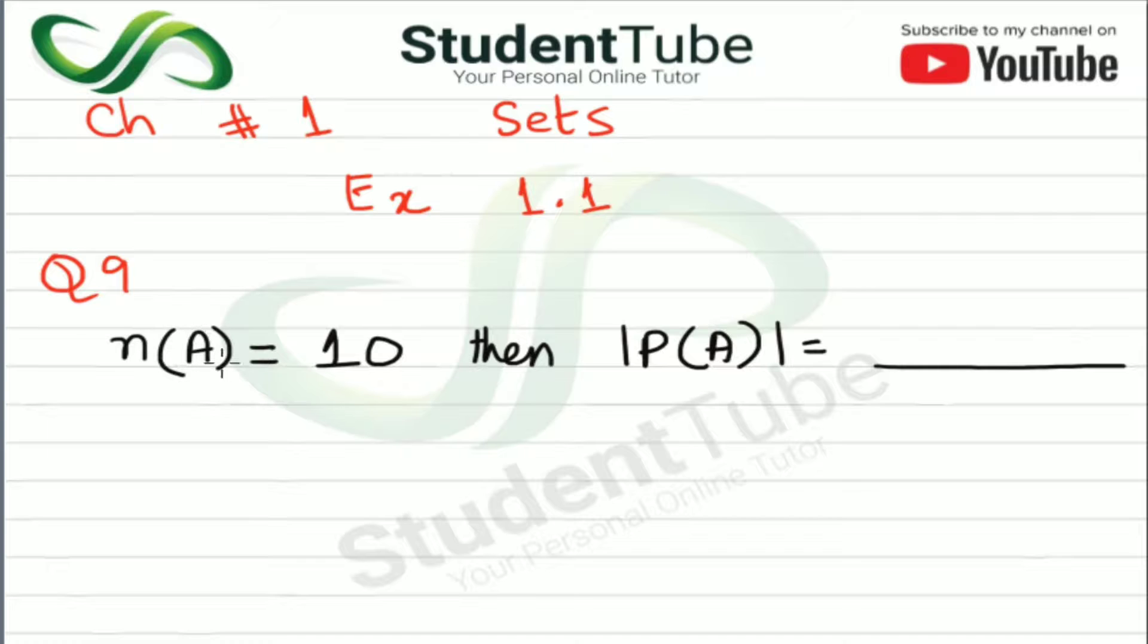Here we have told us that A is a set, and N represents number of elements in set A, that means that in A set, all the elements are 10. So what is the P of A? P of A is telling us how many total subsets will be. So now we will solve it here.